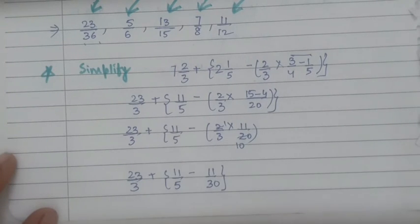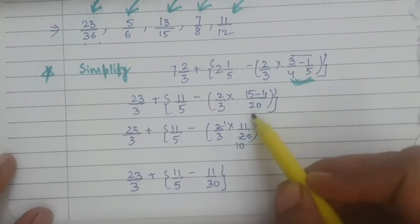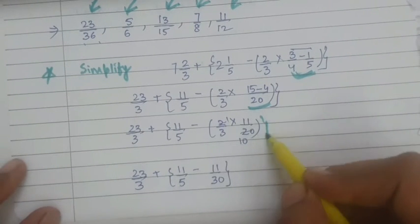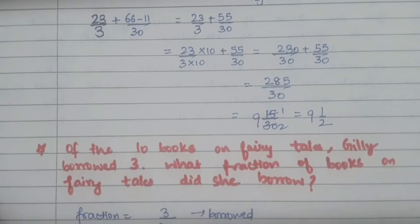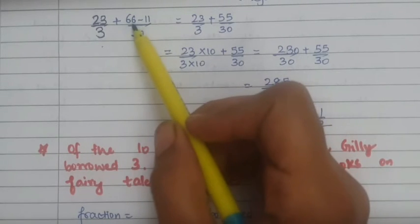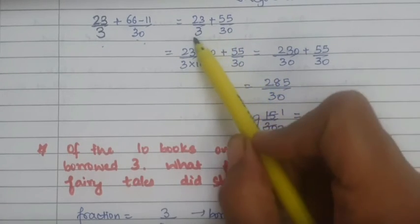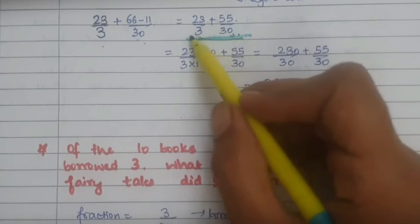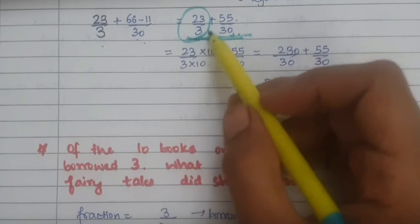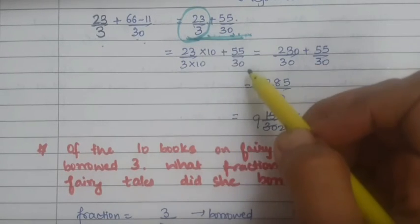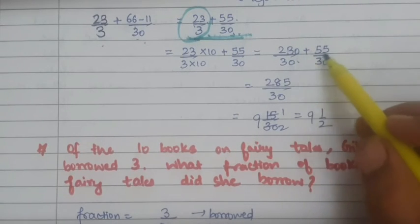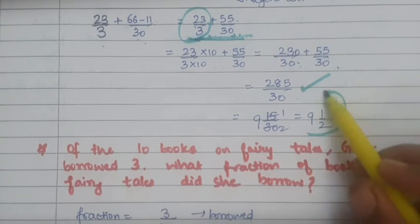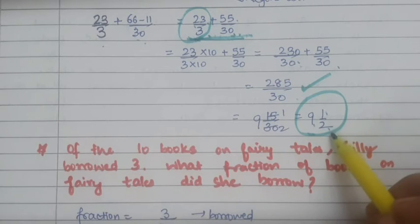The next question is also similar. We will first solve the line bracket and then open the round bracket. So we get 23 upon 3 plus 66 minus 11 upon 30, that is 23 upon 3 plus 55 upon 30. Now, to make the denominator the same, let us multiply the first fraction by 10: 3 into 10 is 30, and 23 into 10 is 230. On addition we get 285 upon 30, which in mixed fraction we can write as 9 and 1 upon 2. Clear?